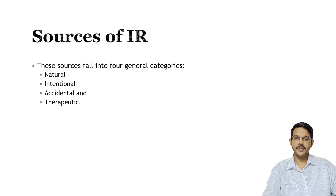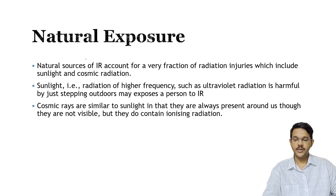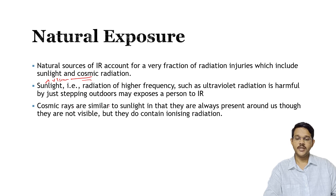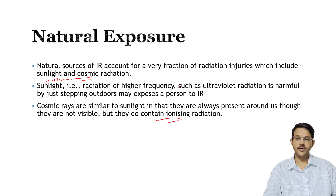Sources of ionizing radiation can be categorized into natural, intentional, accidental, and therapeutic sources. Natural sources of ionizing radiation come from sunlight and cosmic radiation, which contribute a small fraction of ionizing dose. Sunlight — mostly visible light — also contains higher-frequency radiation like ultraviolet radiation, which is harmful to skin. Cosmic rays, similar to sunlight, are always present around us and also represent a form of ionizing radiation.